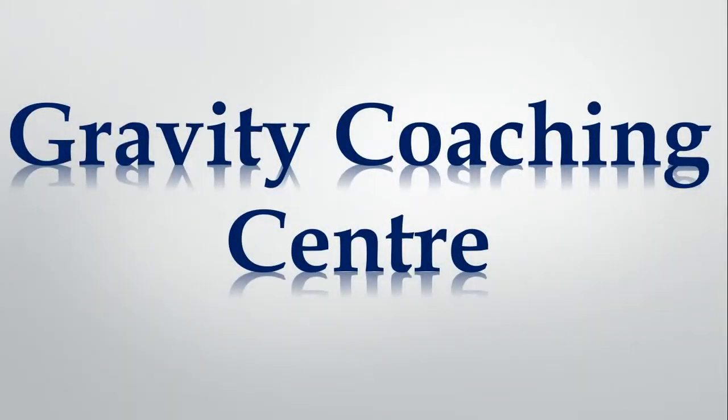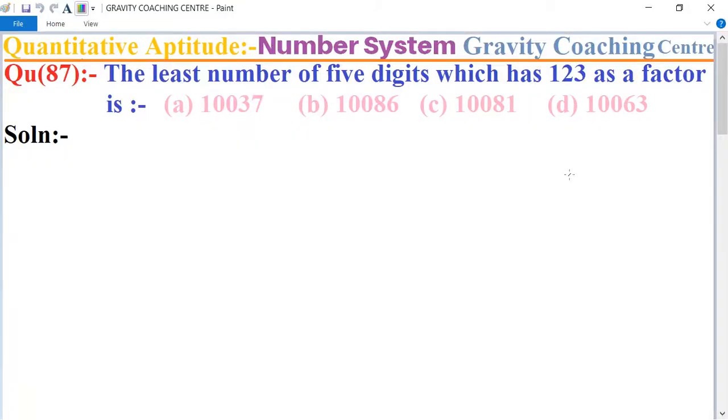Welcome to our channel Gravity Coaching Centre, Quantitative Aptitude chapter Number System, question number 87. The least number of five digits which has 123 as a factor is? In this question, first we write the least five digit number.